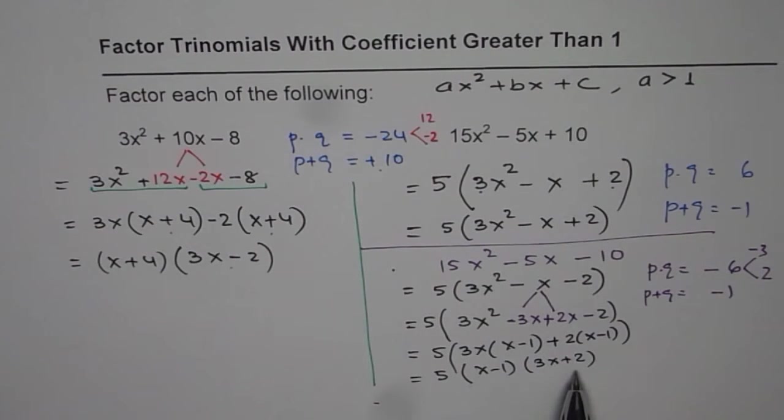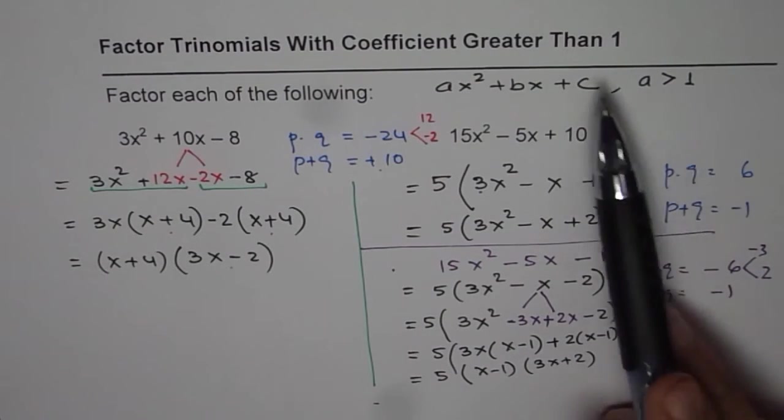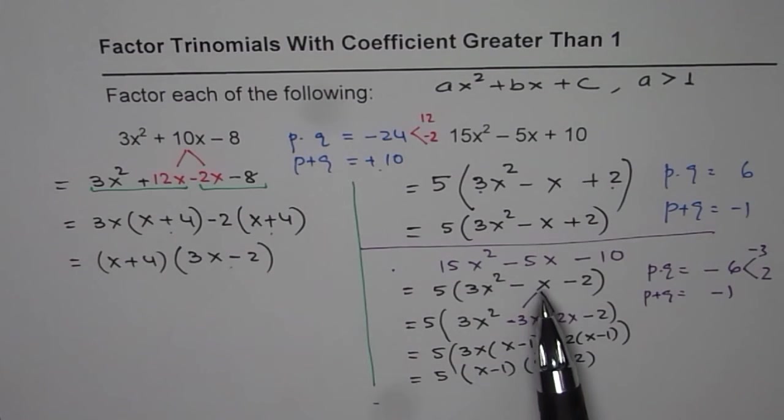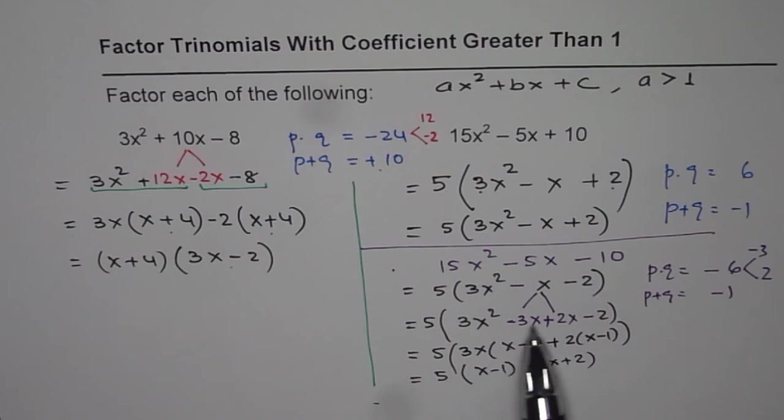So that is how we have to factor. So whenever the coefficient is greater than 1 it is important to split the x term into 2. So we get 4 terms and then you can club and factor as we did in this video. I hope that helps. Thank you and all the best.